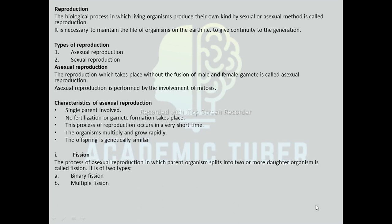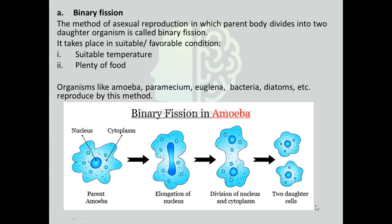Fission: The process of asexual reproduction in which a parent organism splits into two or more daughter organisms is called Fission. It is of two types: Binary Fission and Multiple Fission. Binary Fission is the method in which the parent body divides into two daughter organisms. It takes place under suitable or favorable conditions, i.e. when there is suitable temperature and plenty of food. Organisms like Amoeba, Paramecium, Euglena, Bacteria, and Diatoms reproduce by this method.